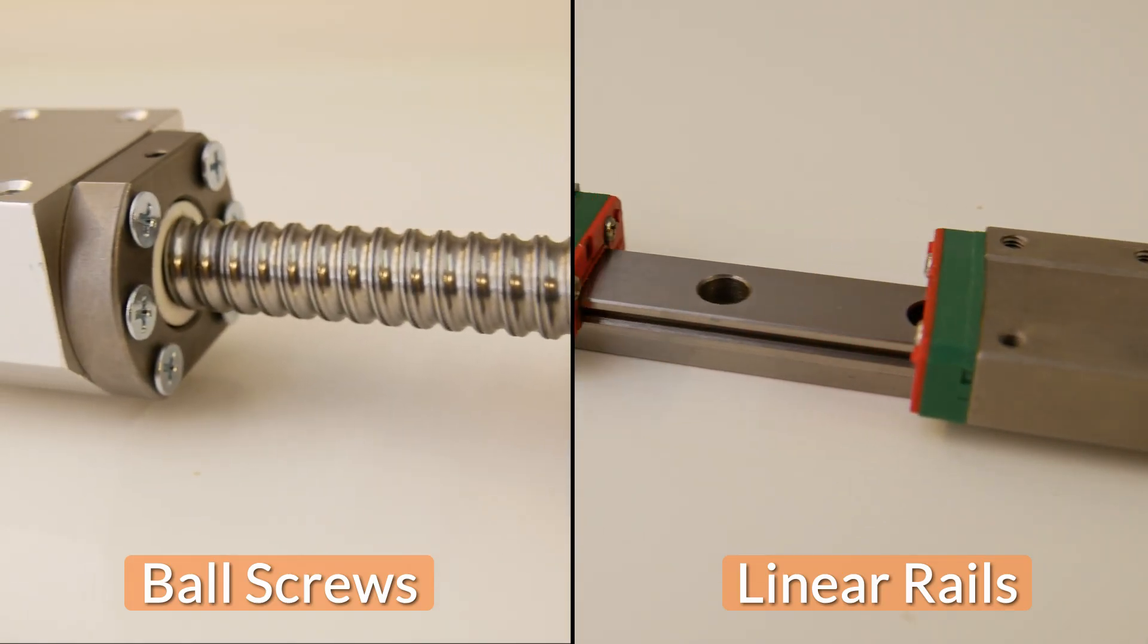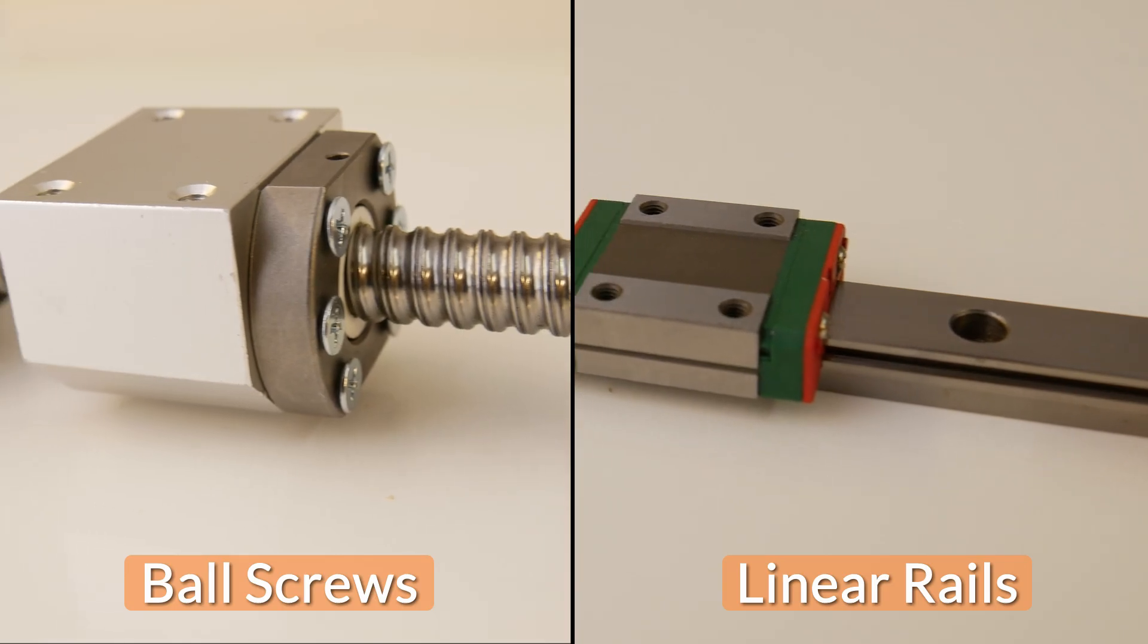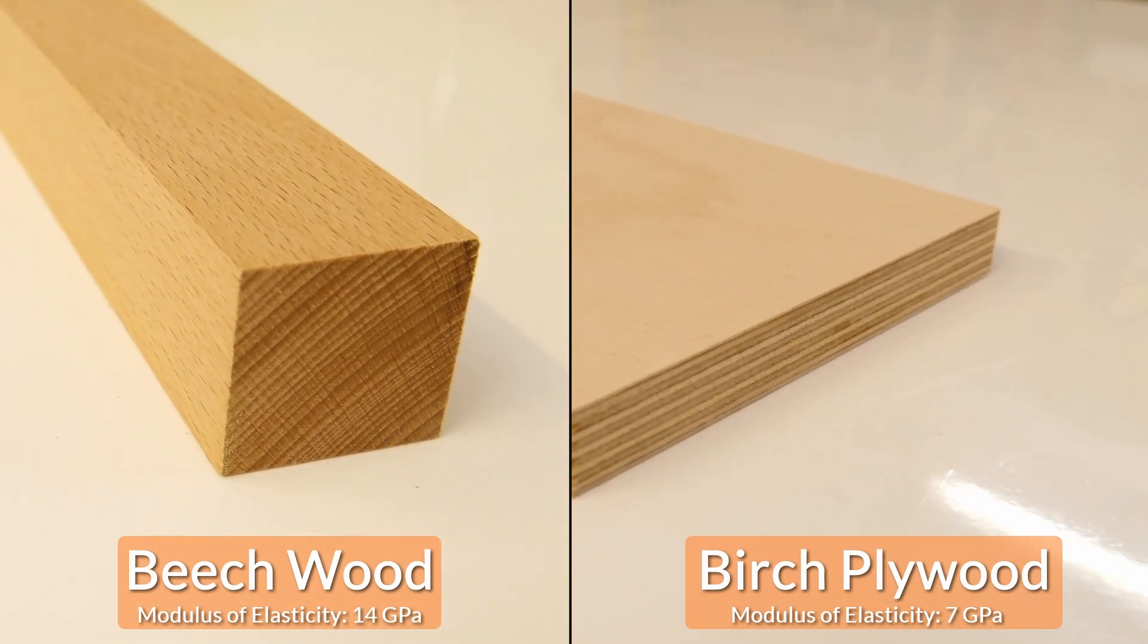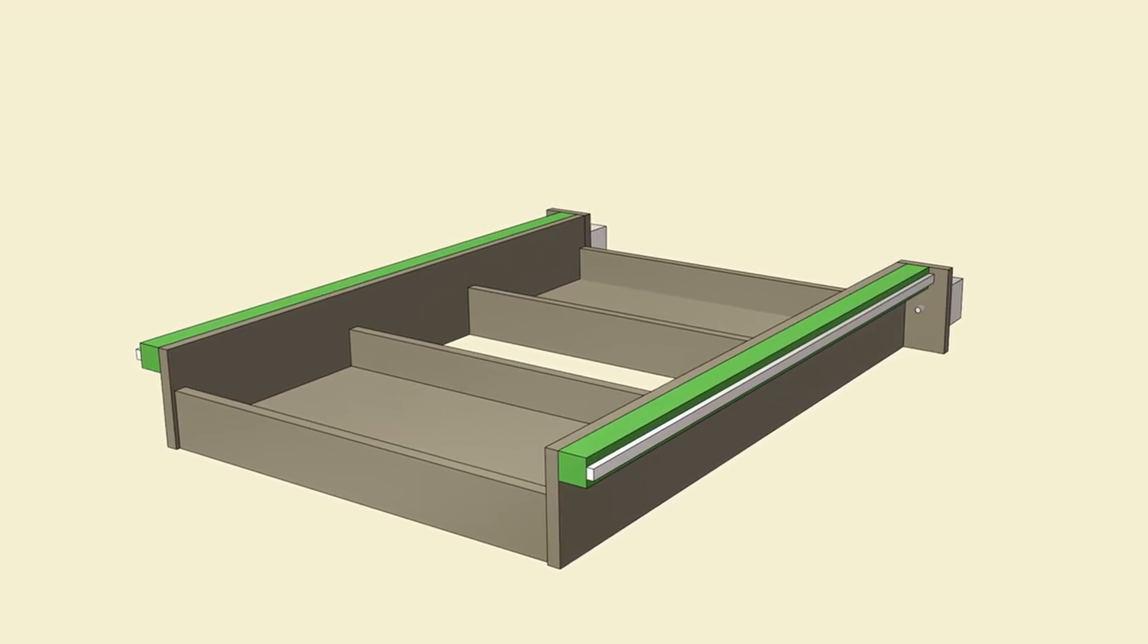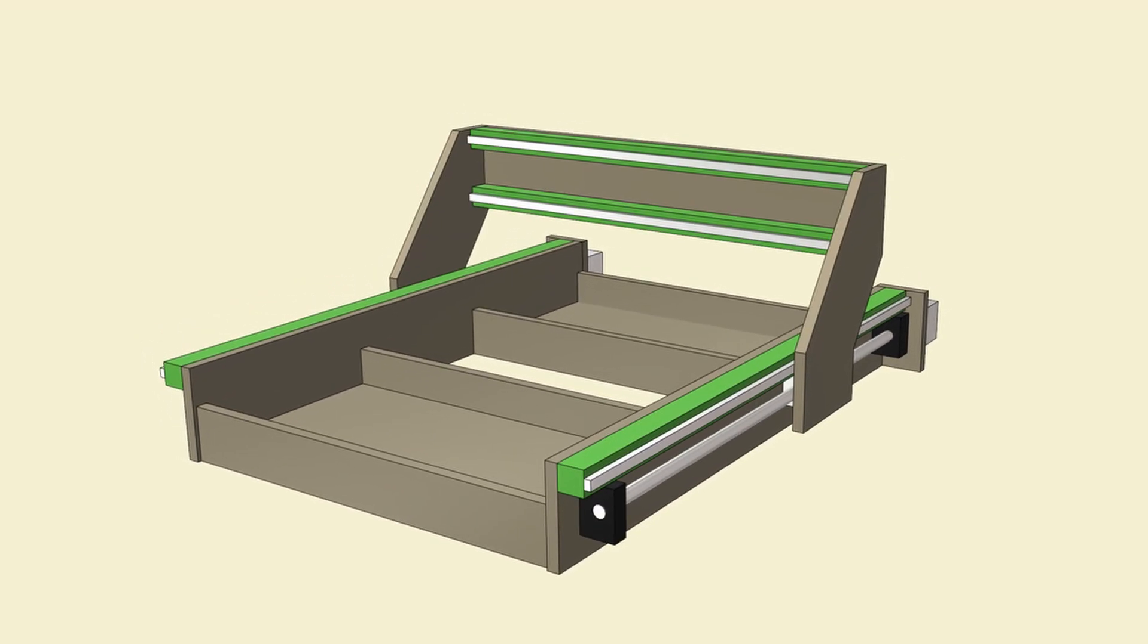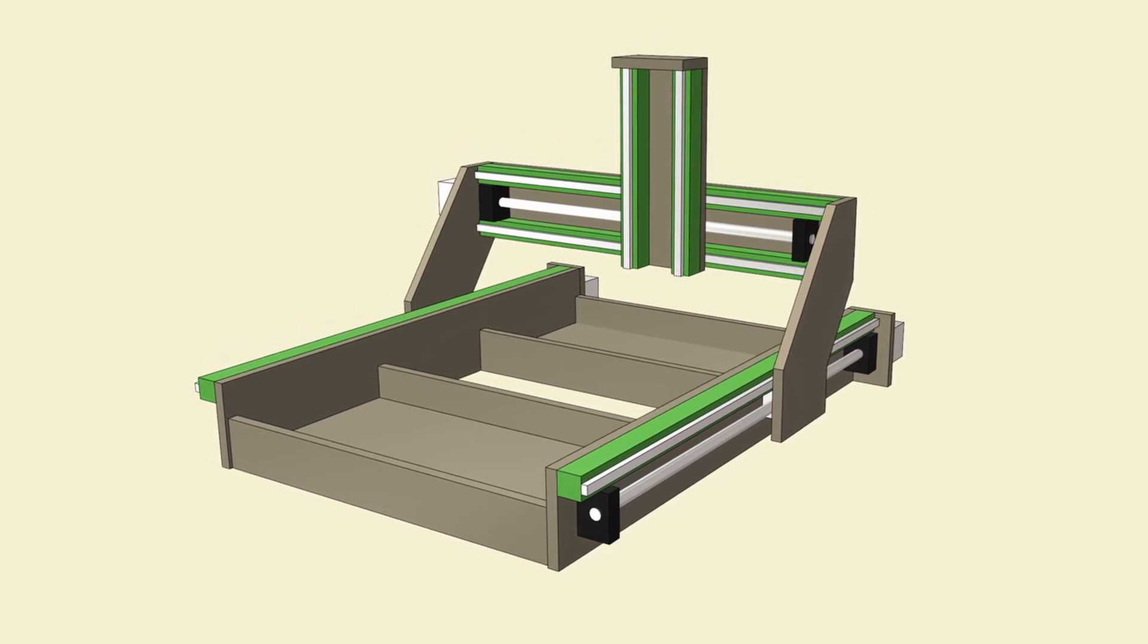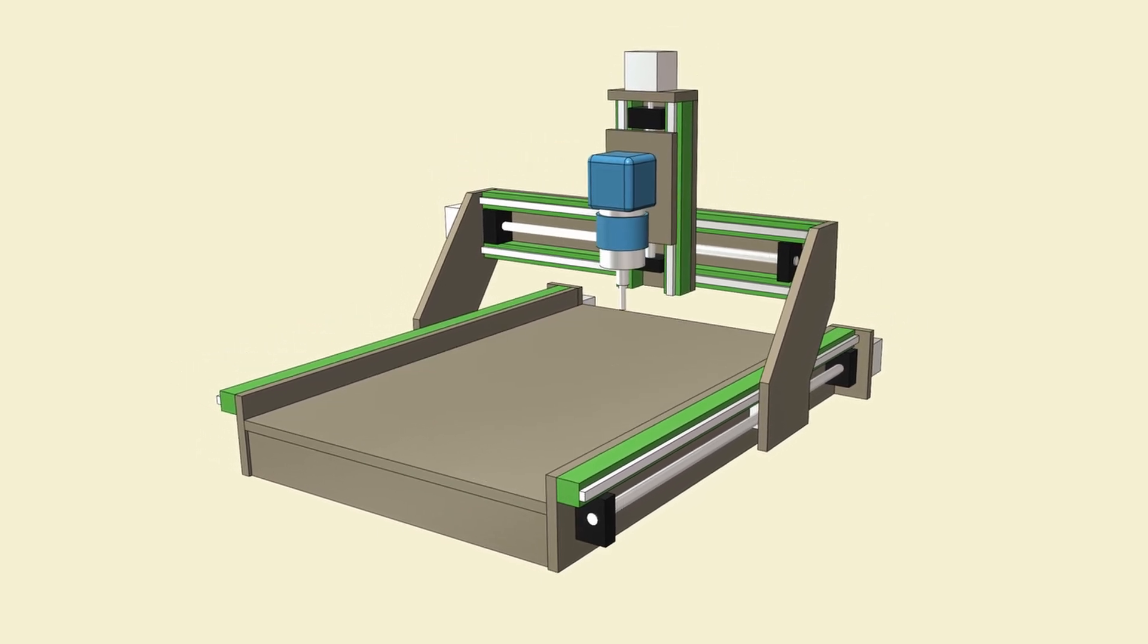As always on my channel I wanted to use natural materials where possible. That's why I chose a combination of birch plywood and solid beech wood for the machine frame. The idea was that the relatively high stiffness of beech wood in a combination with the U and L shaped cross sections of the axles would provide a high enough stiffness for the frame.